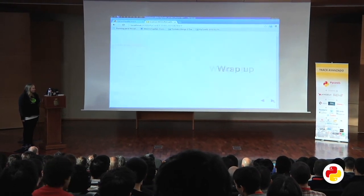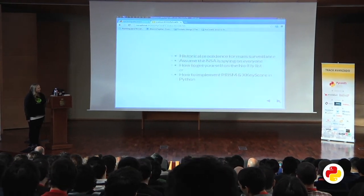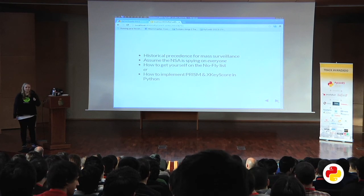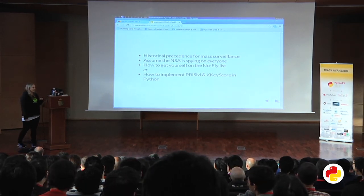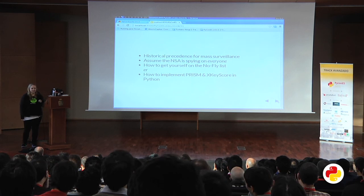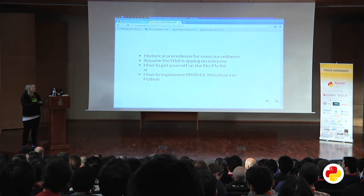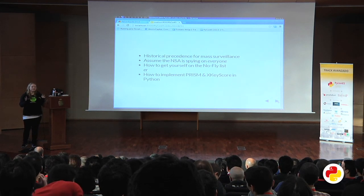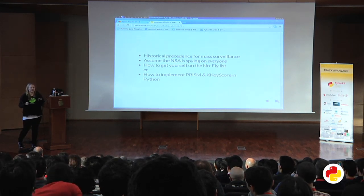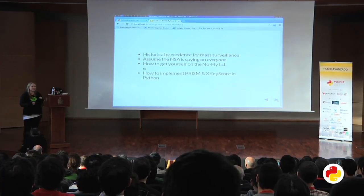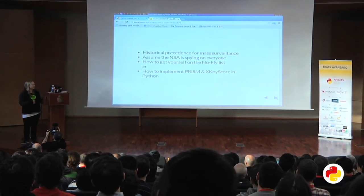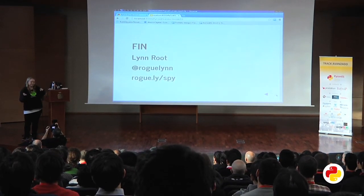I showed you six queries, and I showed you there's quite a historical precedence on mass surveillance because of the Five Eyes and the growing abilities of the NSA. I hope that you leave with the notion that the NSA is pretty much doing this at scale — it's kind of like how you would get on the no-fly list of the USA, but it's really just how to implement a PRISM and XKeyScore within Python. Thank you.